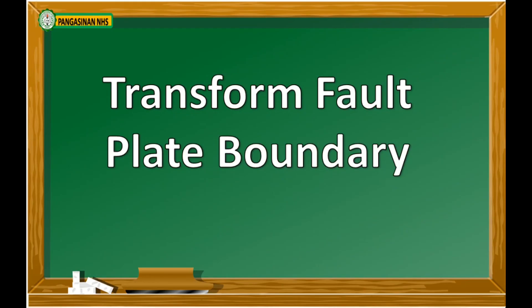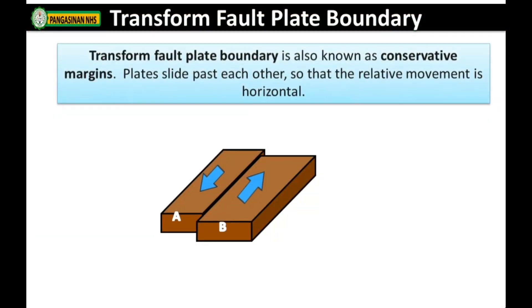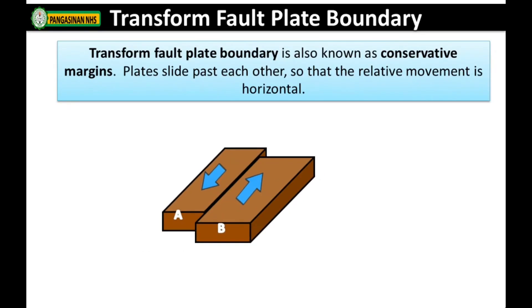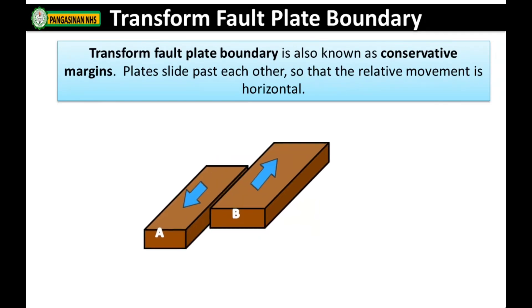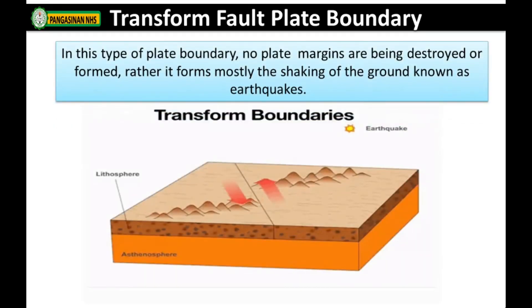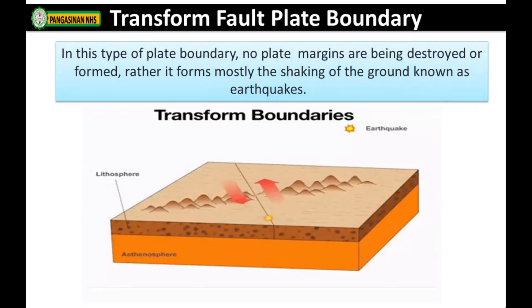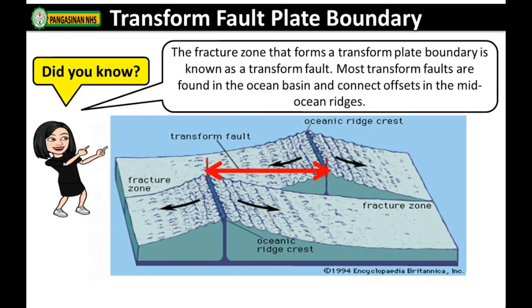Transform fault plate boundary is also known as conservative margins. Plates slide past each other so that the relative movement is horizontal. In this type of plate boundary, no plate margins are destroyed or formed. Rather, it mostly produces shaking of the ground known as earthquakes. Did you know? The fractured zone that forms a transform plate boundary is known as a transform fault. Most transform faults are found in ocean basins and connect offsets in the mid-ocean ridges.